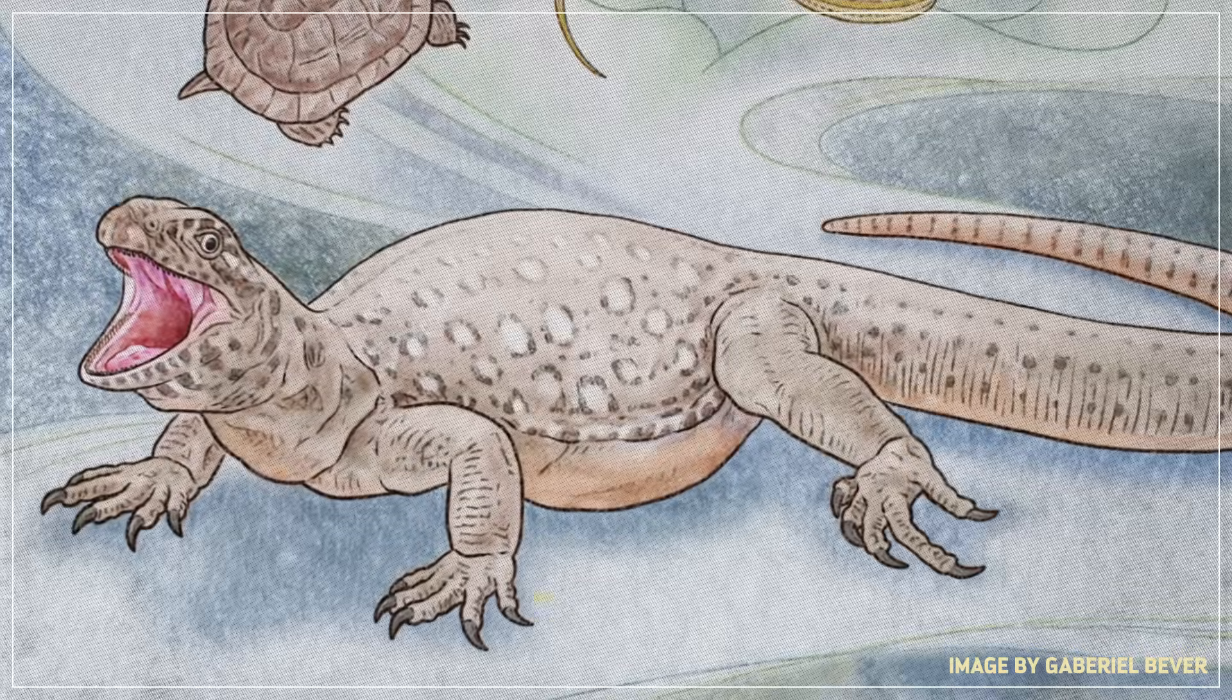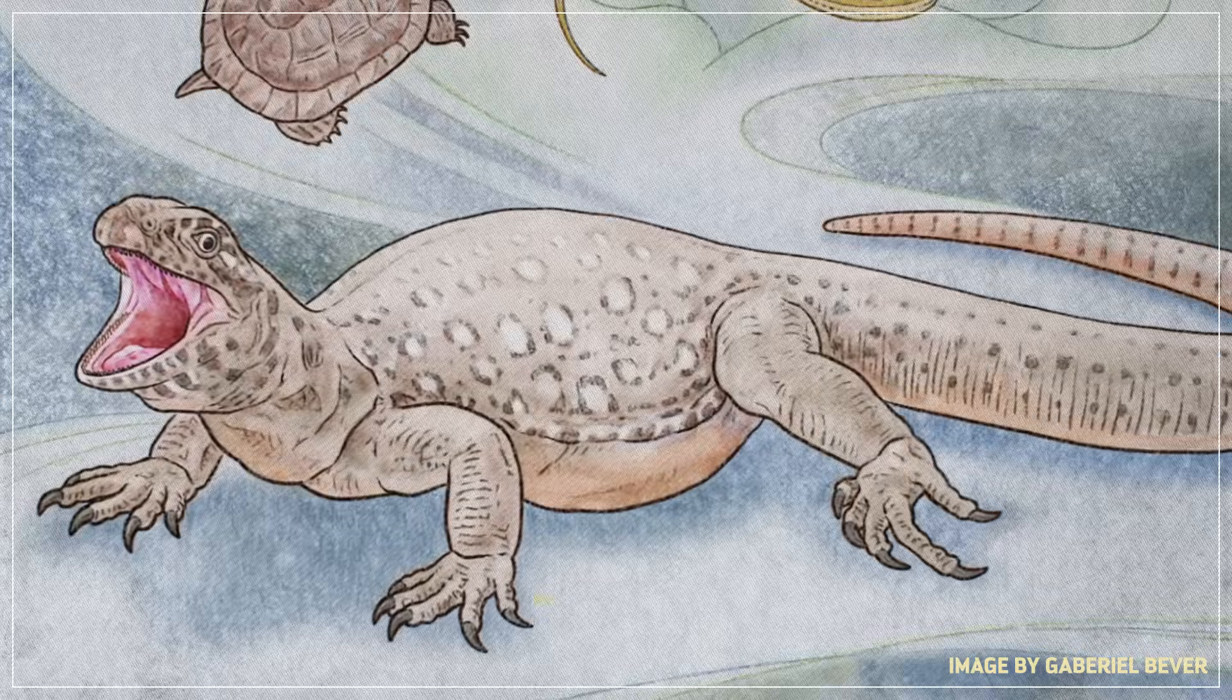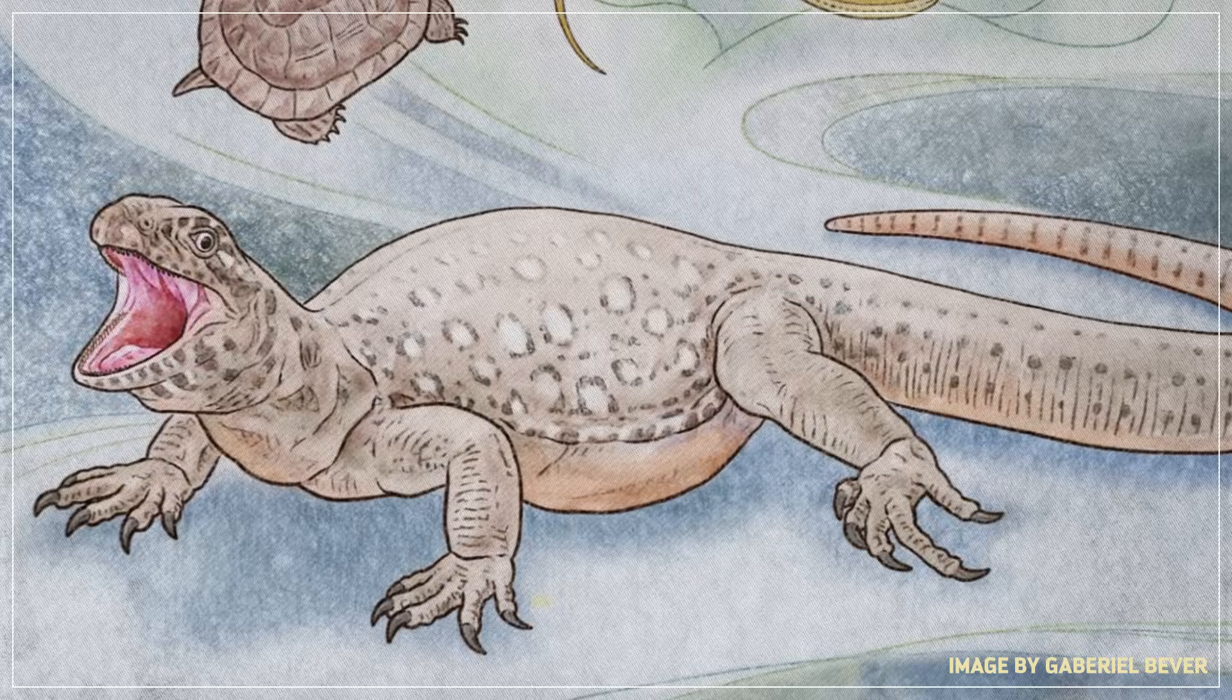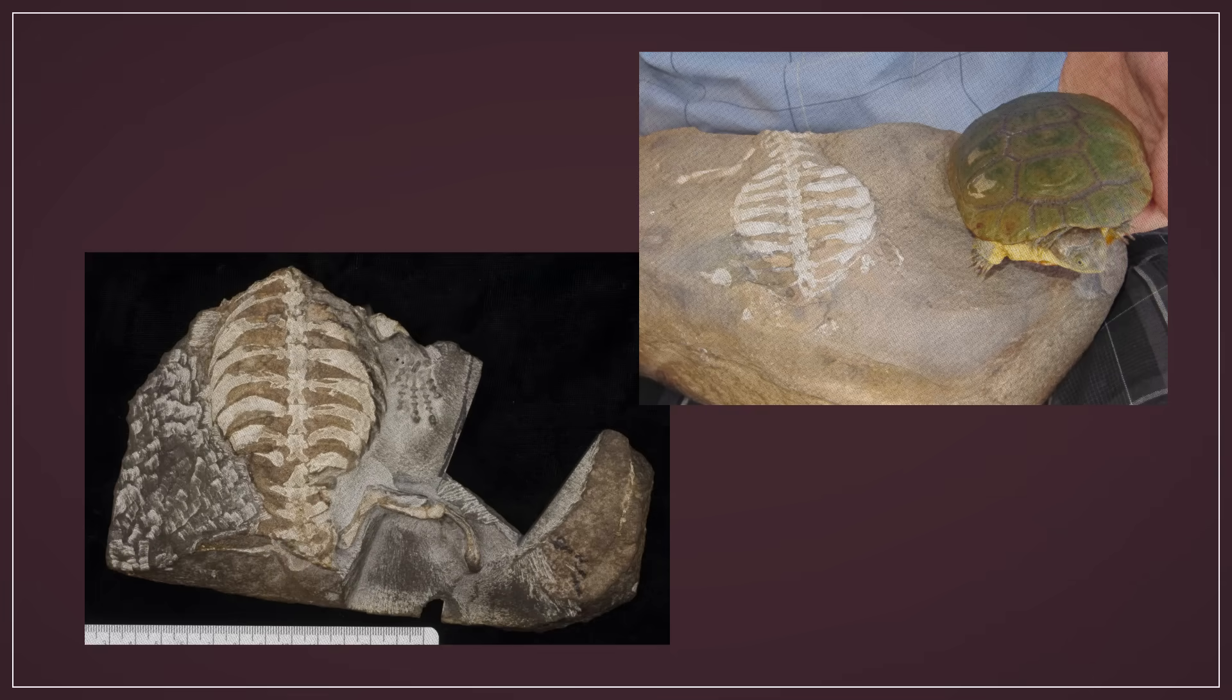Its head was shaped basically like a shovel, its front legs were stronger than its rear legs, and it had giant claws that would have been great for digging. So the evidence pointed to life as a burrower, and this could help explain why it had those wide ribs, and where turtle shells came from.